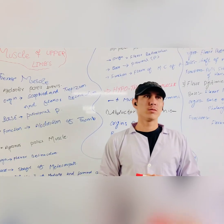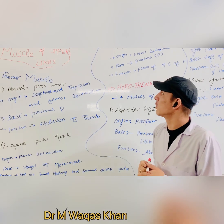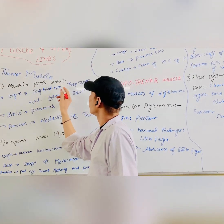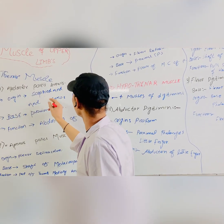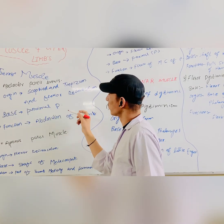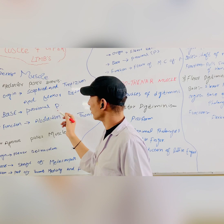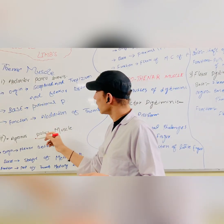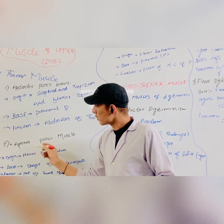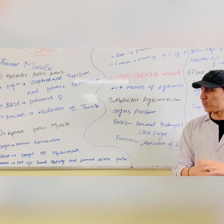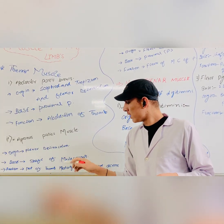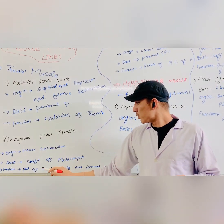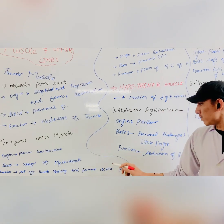My name is Mohamed Rakaskwan from group 19. Today I am going to explain the thenar muscles. The first is abductor pollicis brevis. Its origin is the scaphoid, trapezium, and flexor retinaculum. Its insertion is the proximal phalanx of the thumb. Its function is abduction of the thumb. The second muscle is opponens pollicis. Its origin is the flexor retinaculum, and its insertion is the shaft of the first metacarpal. Its function is to pull the thumb medially and draw it across the palm.